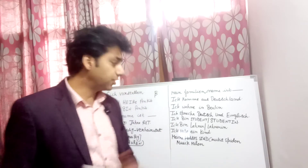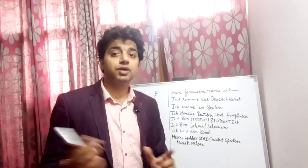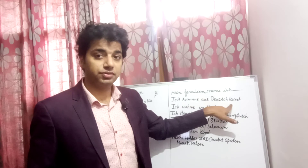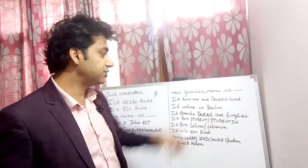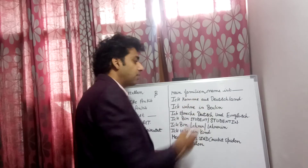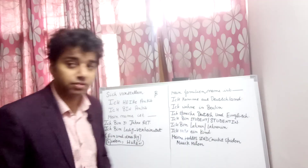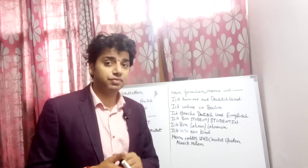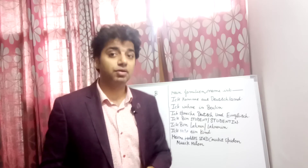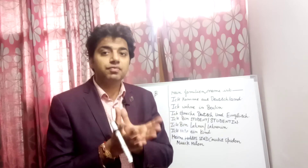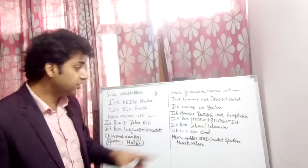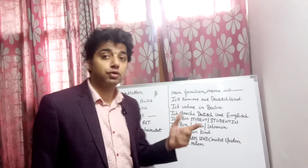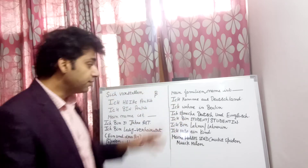If I'm saying 'I come from Germany,' we have the phrase 'Ich komme aus Deutschland.' That means 'I come from Germany.' If I say 'I live in Berlin,' we use the verb 'wohnen.' So: 'Ich wohne in Berlin' — that means 'I live in Berlin.'